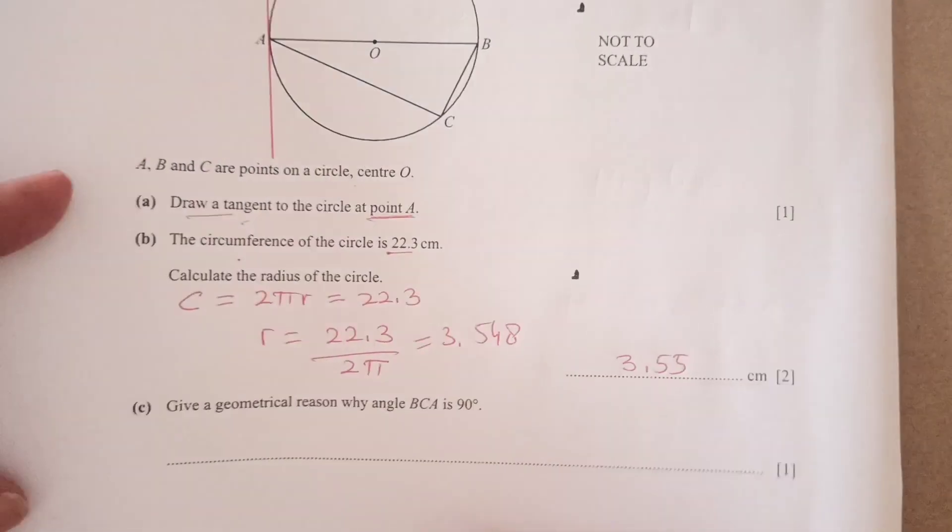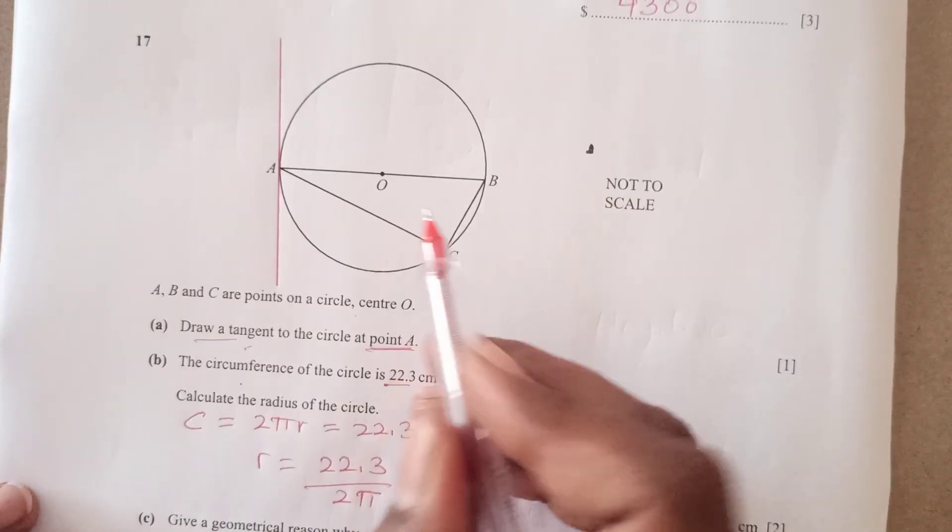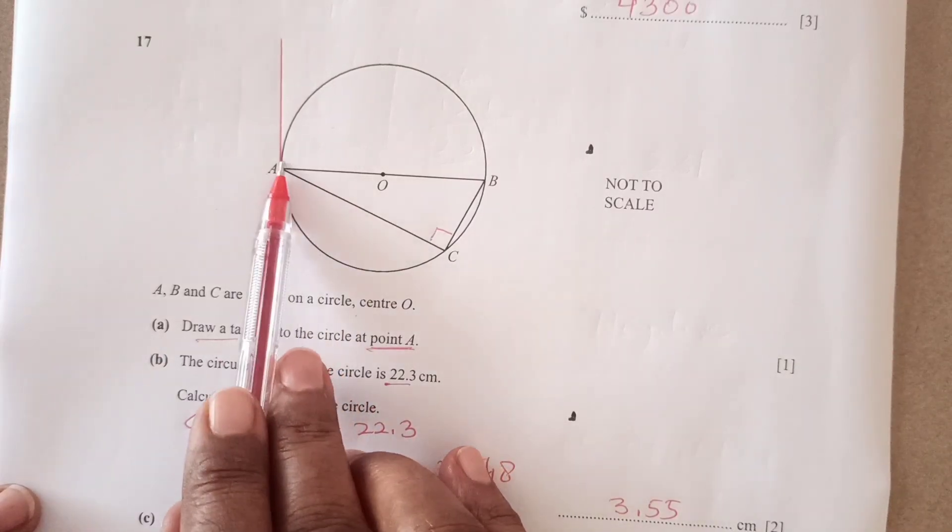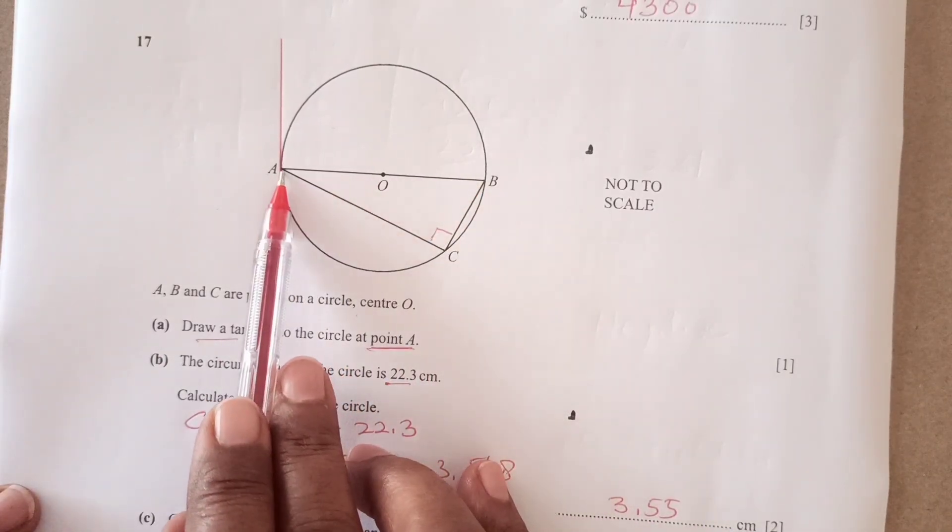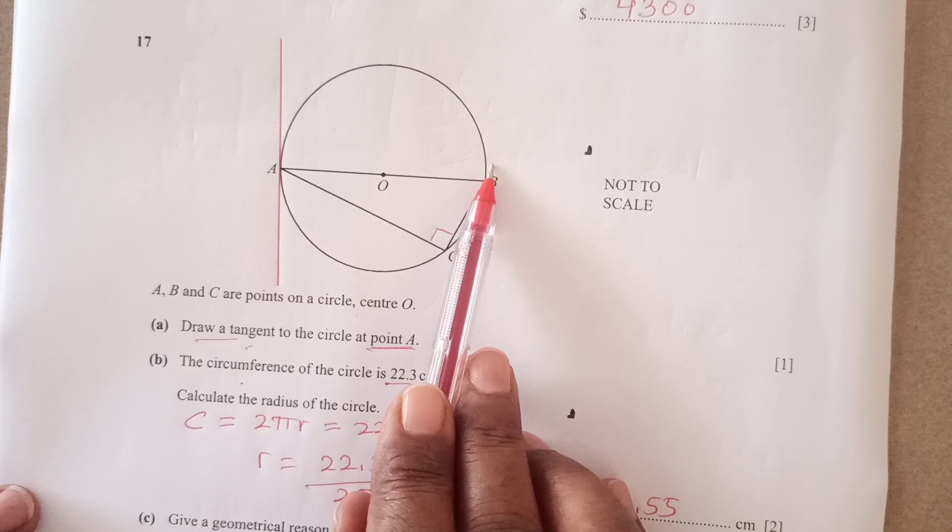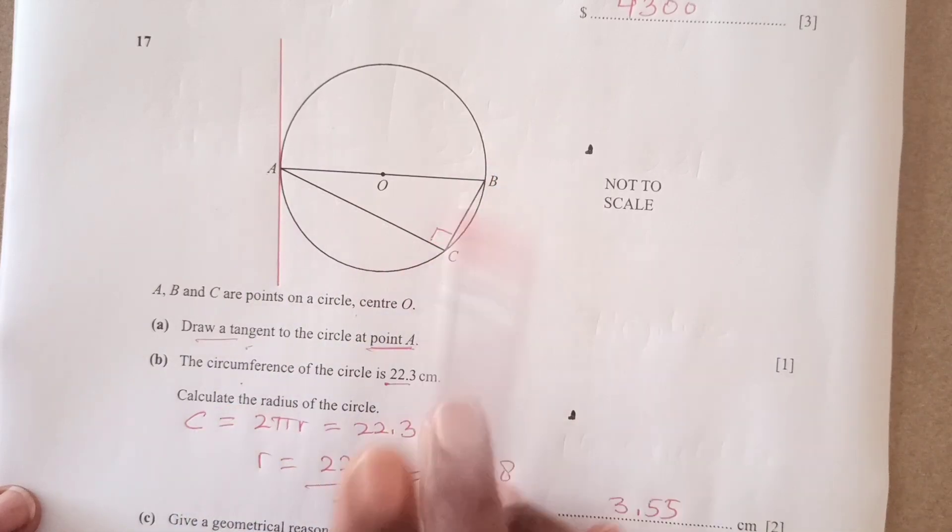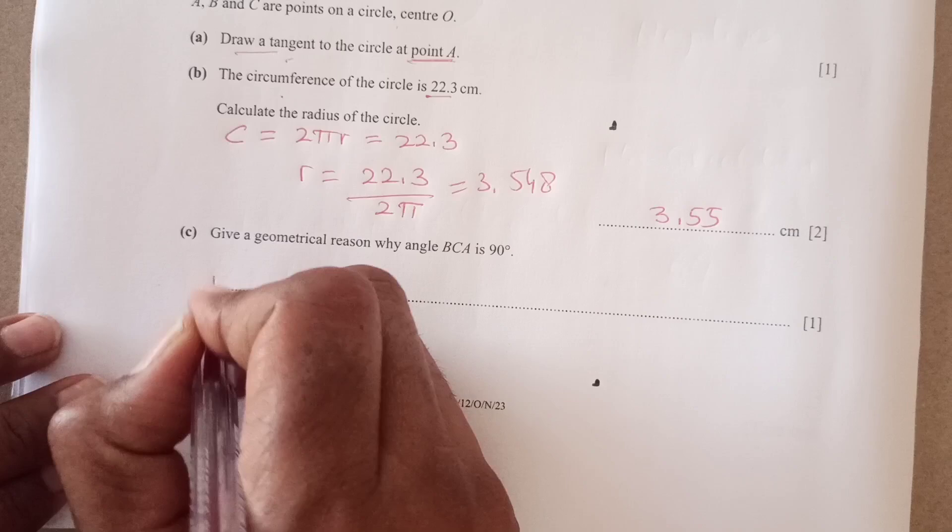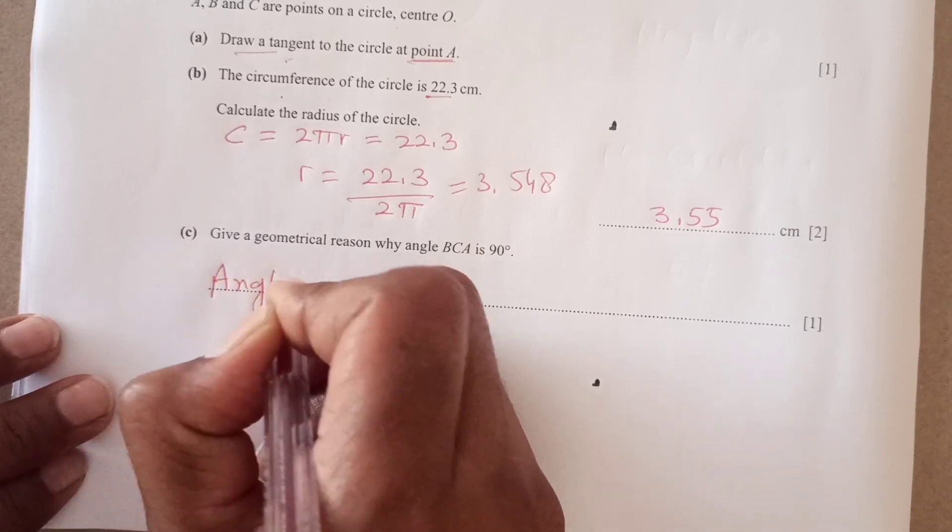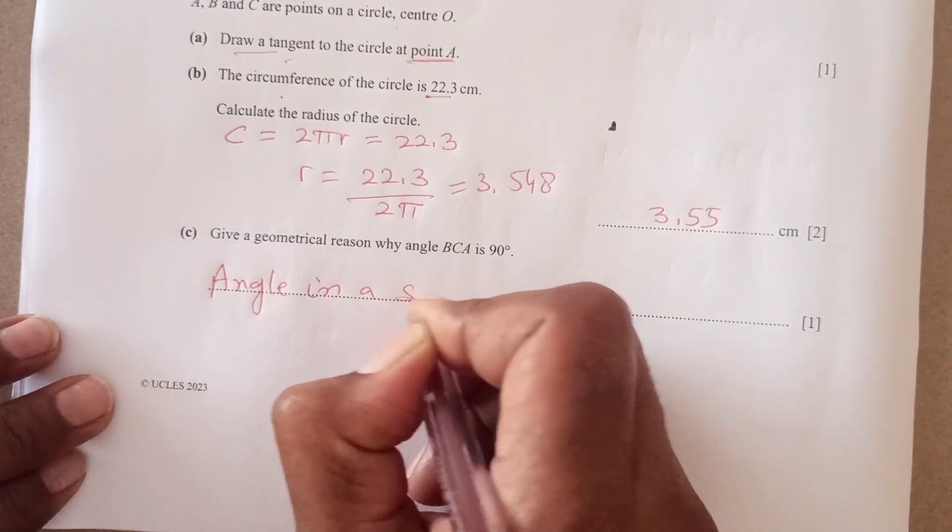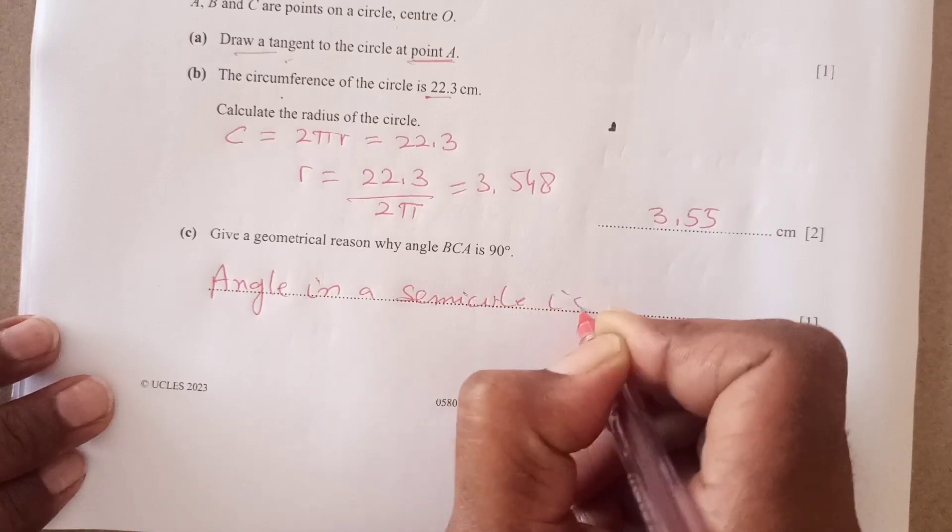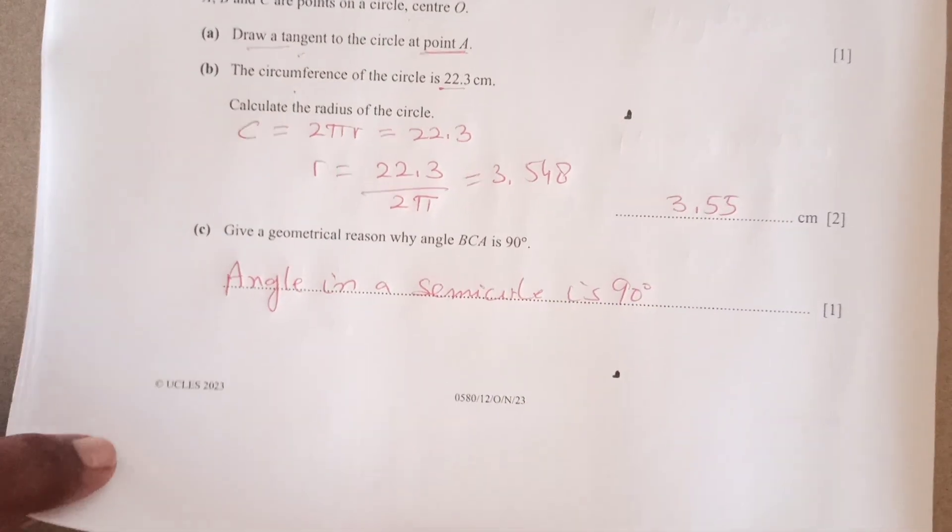Now give a geometrical reasoning, reason why BCA is 90. BCA, this angle is 90. Now as you see, this line passes through the center. So that means this is a semicircle and any angle in semicircle is 90 degrees. So we will write down here angle in a semicircle. Angle in a semicircle is 90 degrees, right?